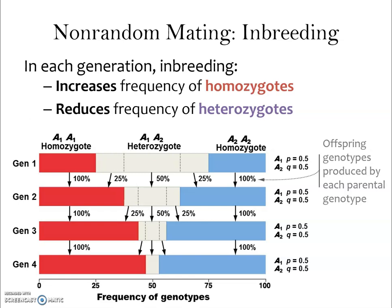Laying this out into generations three and four, you can see that on the right the allele frequencies aren't changing — we still have equal representation of A1 and A2. But what is changing are the genotype frequencies: we have many fewer heterozygotes than we started with and many more homozygotes. The allele frequencies stay the same.